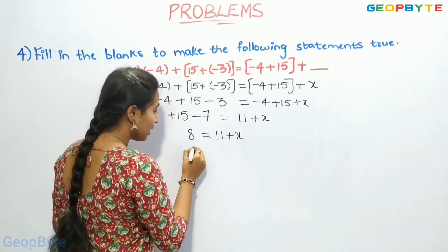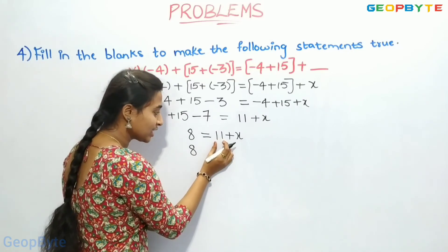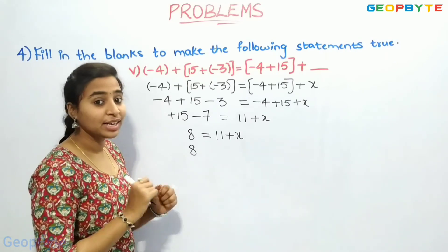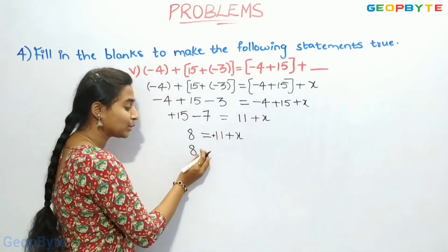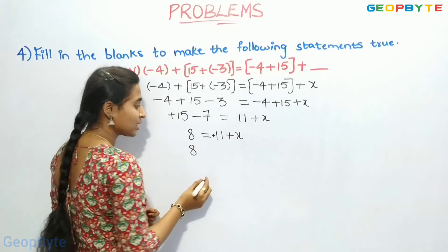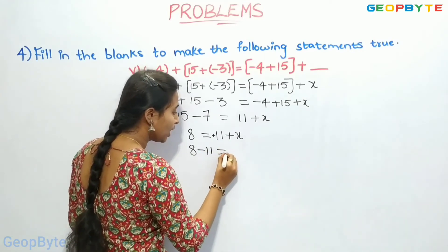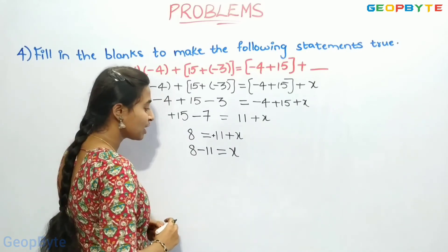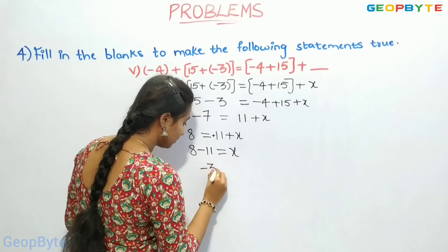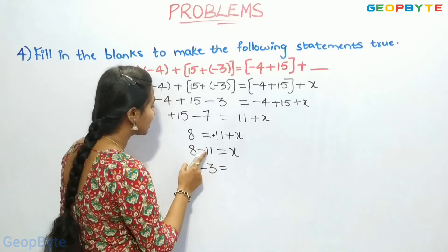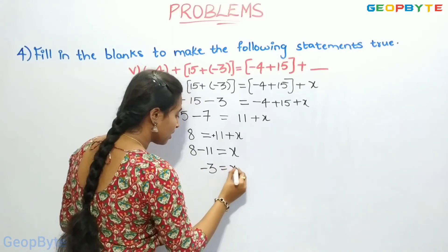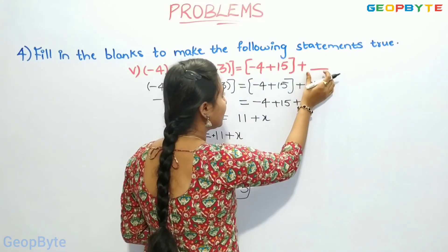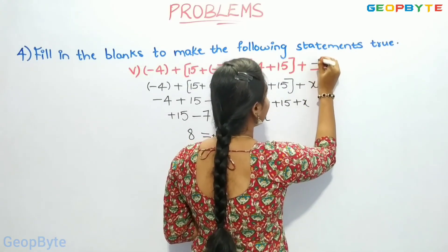Now, let us write 8 as it is. We bring this plus 11 from the right-hand side to the left-hand side — it becomes minus 11, since the sign of the integer changes when it moves sides. So x is equal to 8 minus 11. 8 minus 11 is minus 3, as the minus sign belongs to the greater number. Therefore, x is equal to minus 3. We assumed the missing integer as x, and we got minus 3. Let us write the answer.